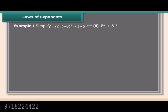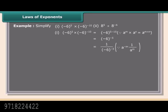1 upon 8 raised to the power minus 2 equals 8 raised to the power 2, which equals 8 into 8, equals 64. Example: Simplify minus 6 raised to the power 5 into minus 6 raised to the power minus 10, and 8 raised to the power 5 divided by 8 raised to the power minus 6. Solution: Minus 6 raised to the power 5 into minus 6 raised to the power minus 10 equals minus 6 raised to the power 5 minus 10, equals minus 6 raised to the power minus 5, which equals 1 upon minus 6 raised to the power 5.